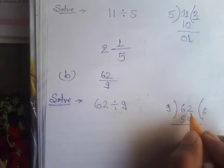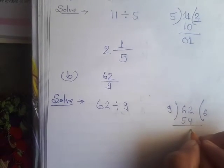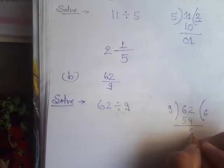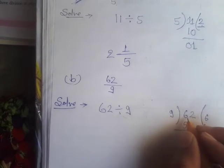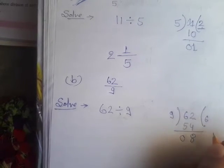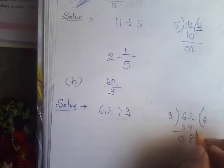6 times. So 62 minus 54 is 8. So whole number is 6 and remainder is 8.